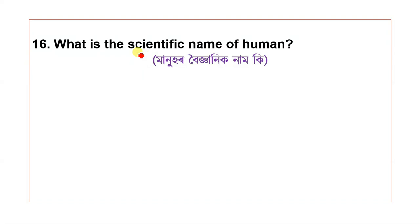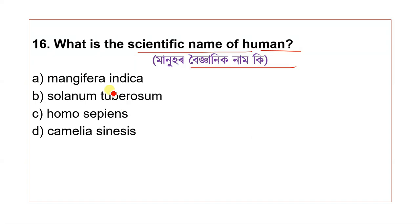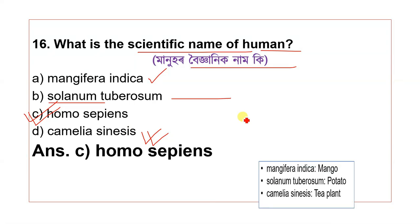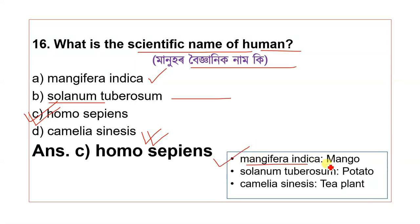Question 16: What is the scientific name of humans? The options are Mangifera indica, Solanum tuberosum, Homo sapiens, and Camellia sinensis. Mangifera indica is the mango, Solanum tuberosum is the potato, Camellia sinensis is the tea plant, and Homo sapiens is the scientific name of humans.